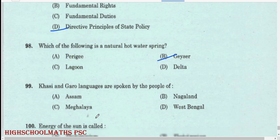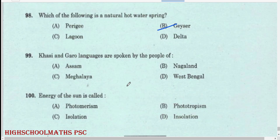Khasi and Garo languages are spoken by the people of Meghalaya. Energy of the sun is called insolation.